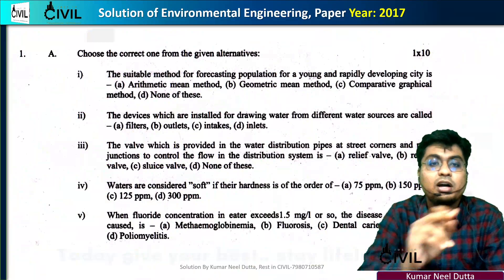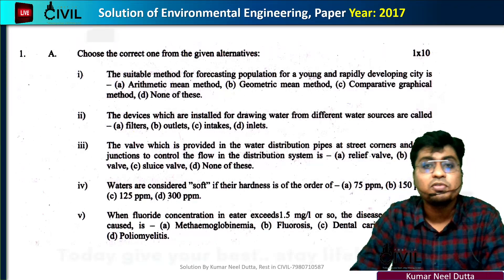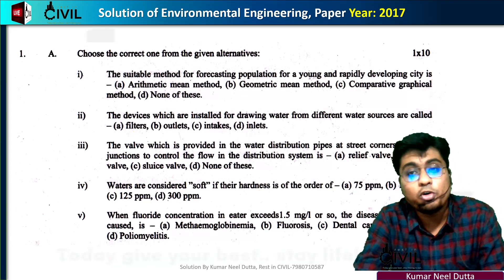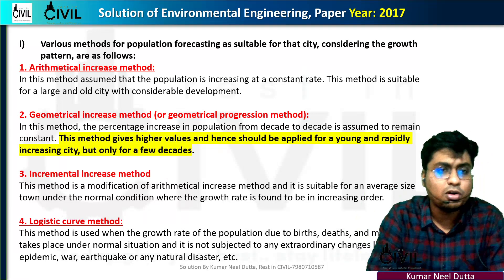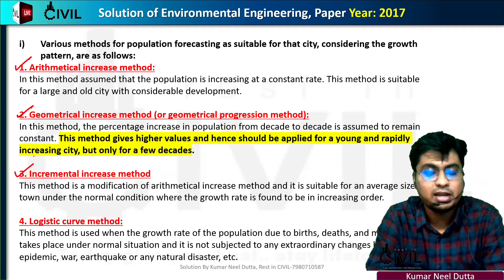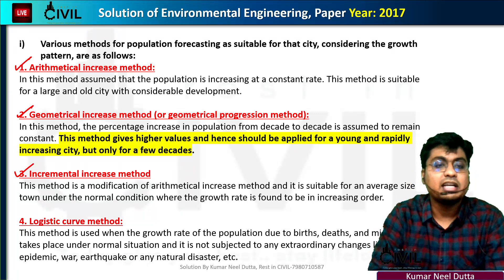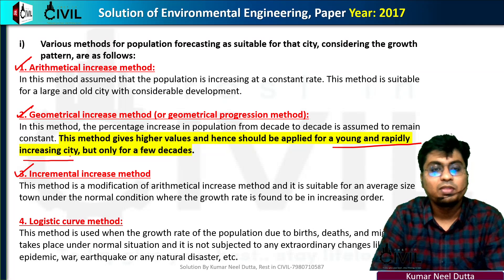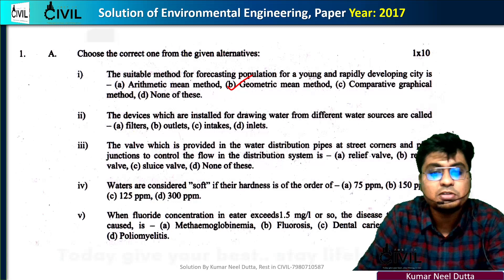First, we will talk about MCQs. We will discuss the suitable method for forecasting population for young and rapidly developing cities. We will explain which method to use to forecast the population and the difference between the available methods. The method that should be applied for young and rapidly increasing cities is the Geometrical Mean Method.